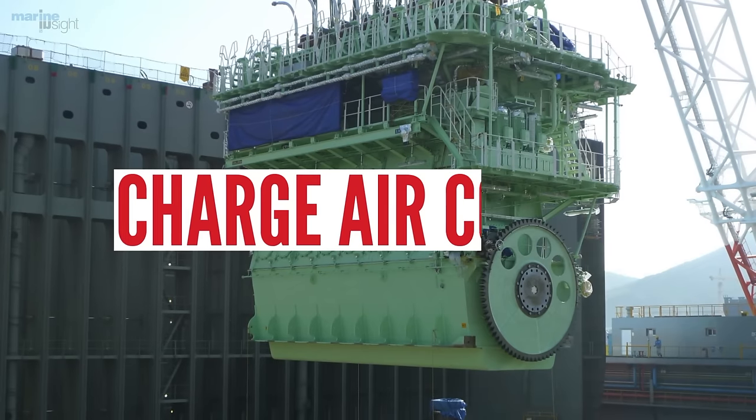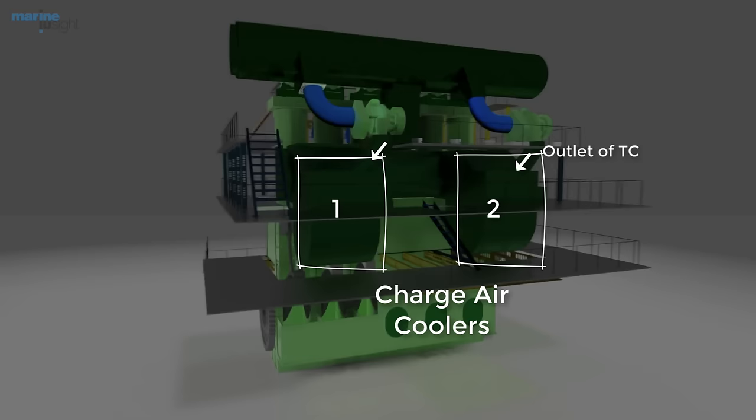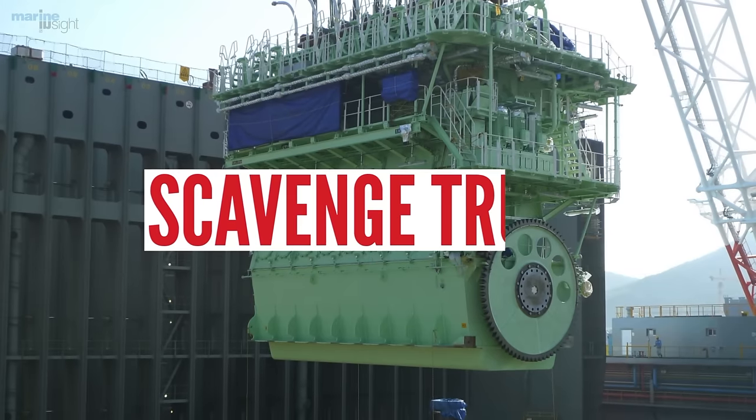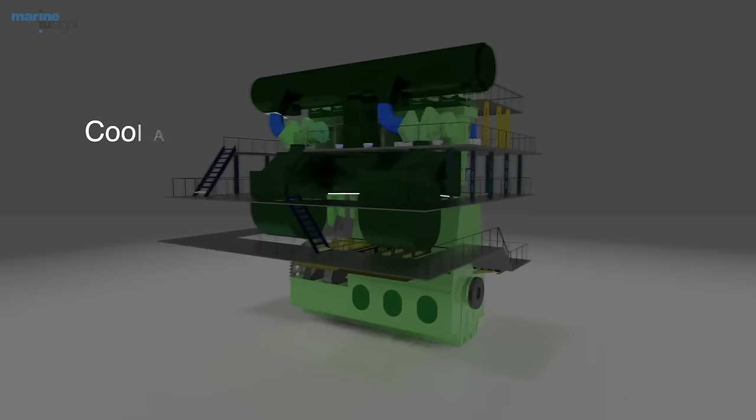Charge air cooler: The charge air cooler is a cooling arrangement for air supplied from the turbocharger before sending it to the combustion chamber. It is usually located below the turbocharger and adjacent to the scavenged space. Scavenged trunk: The scavenged trunk is a space where the cooled air from the charge air cooler is supplied for efficient combustion.